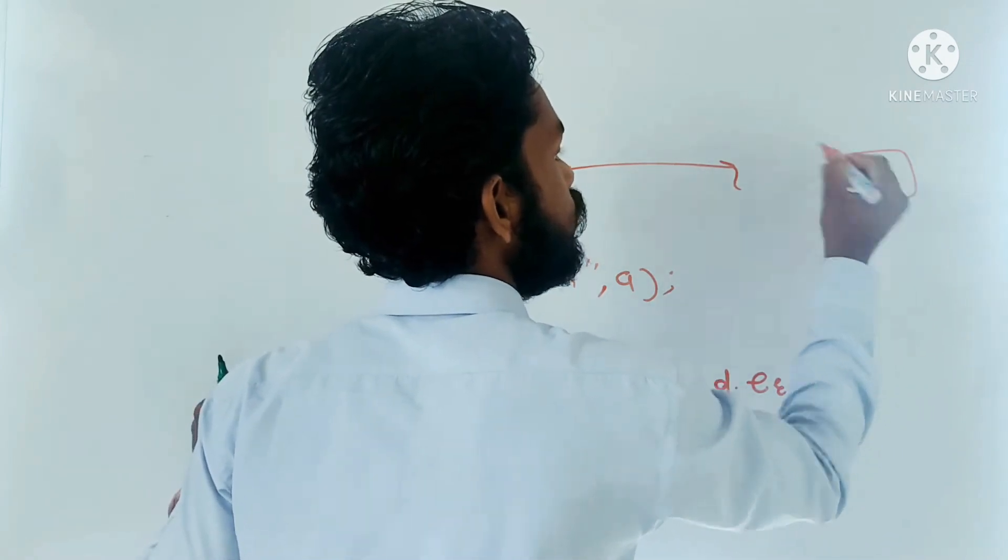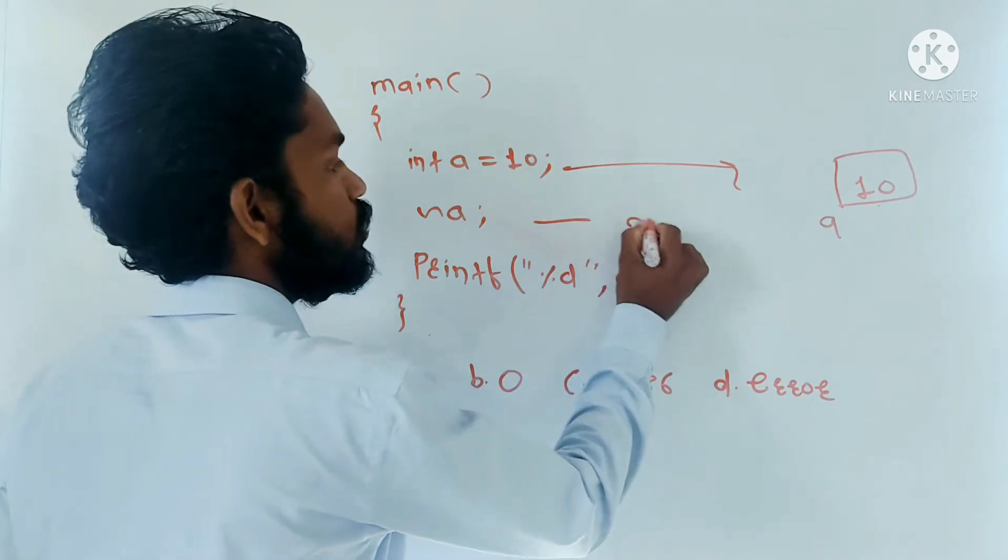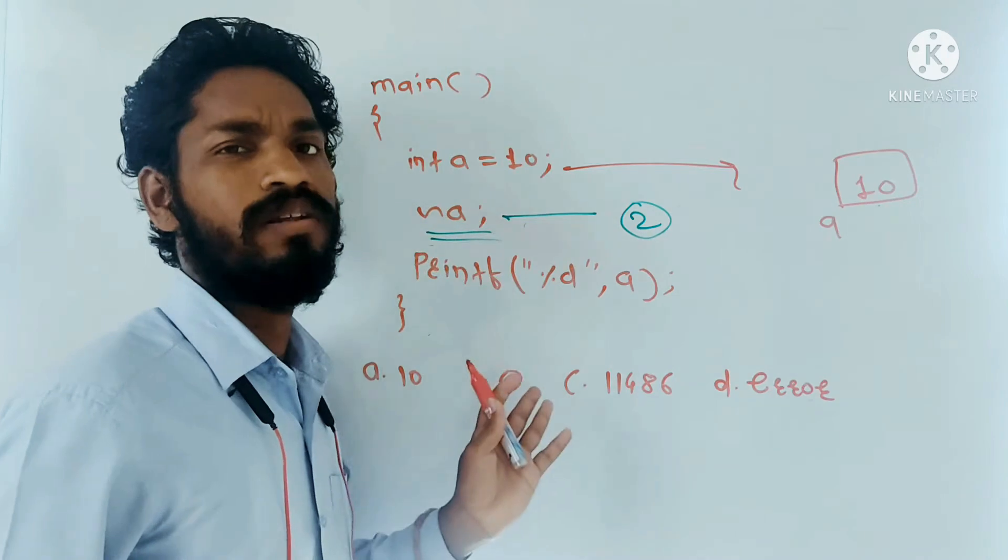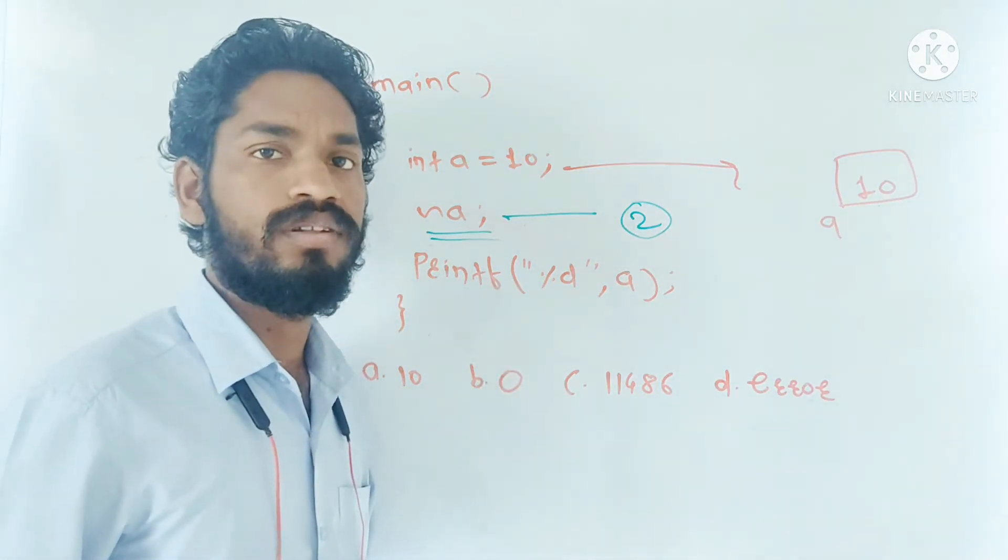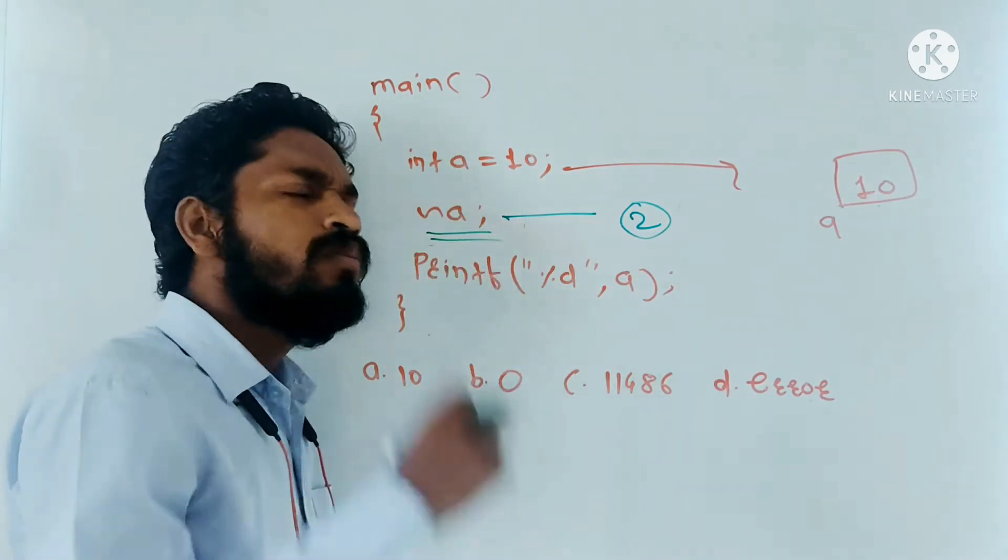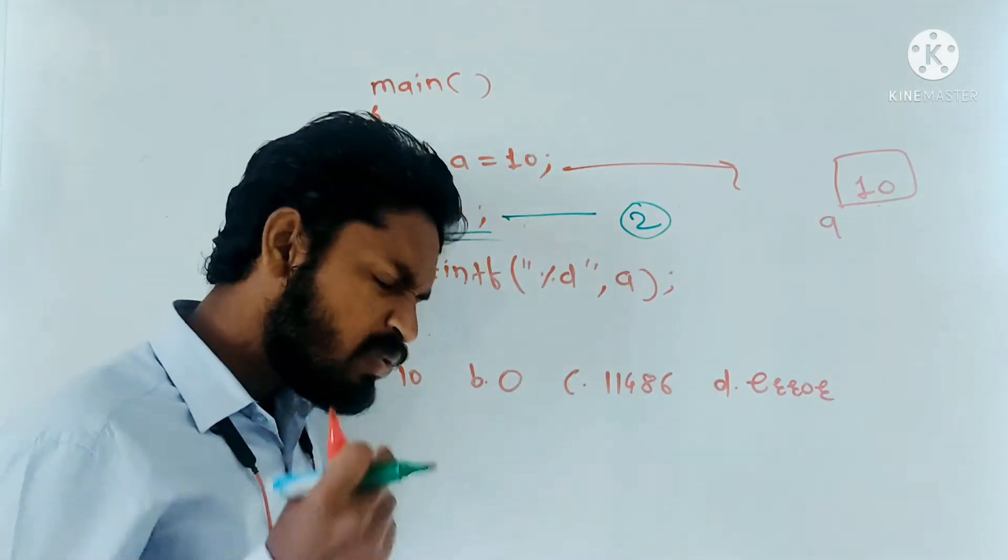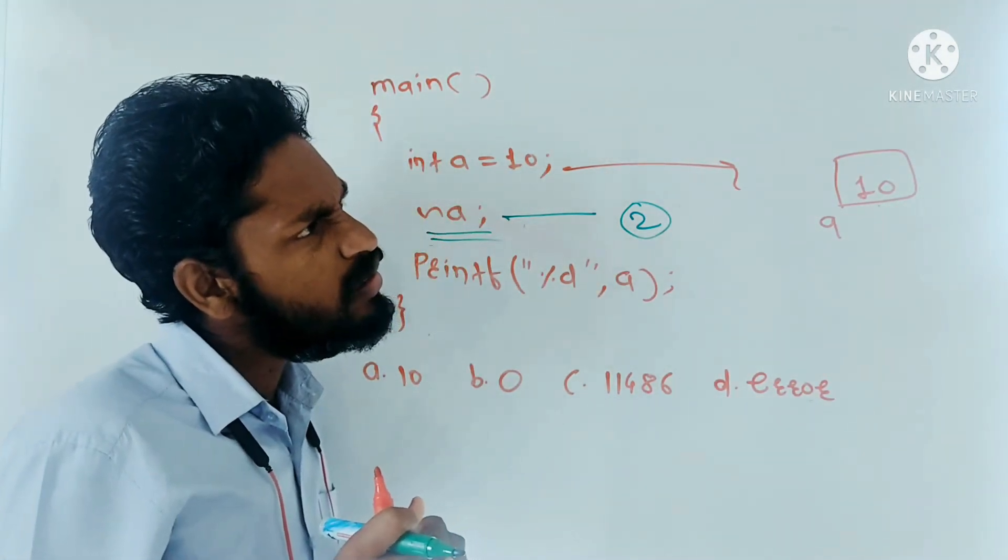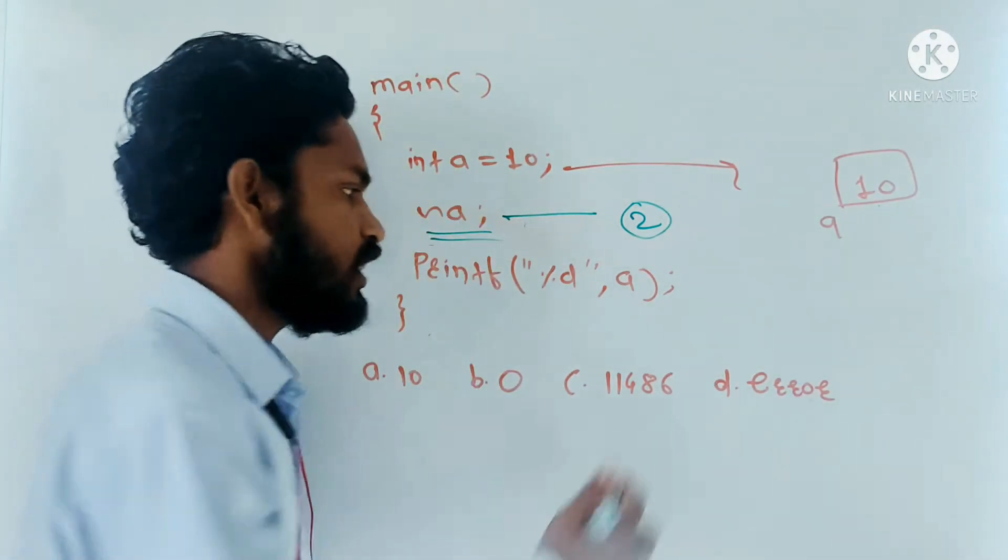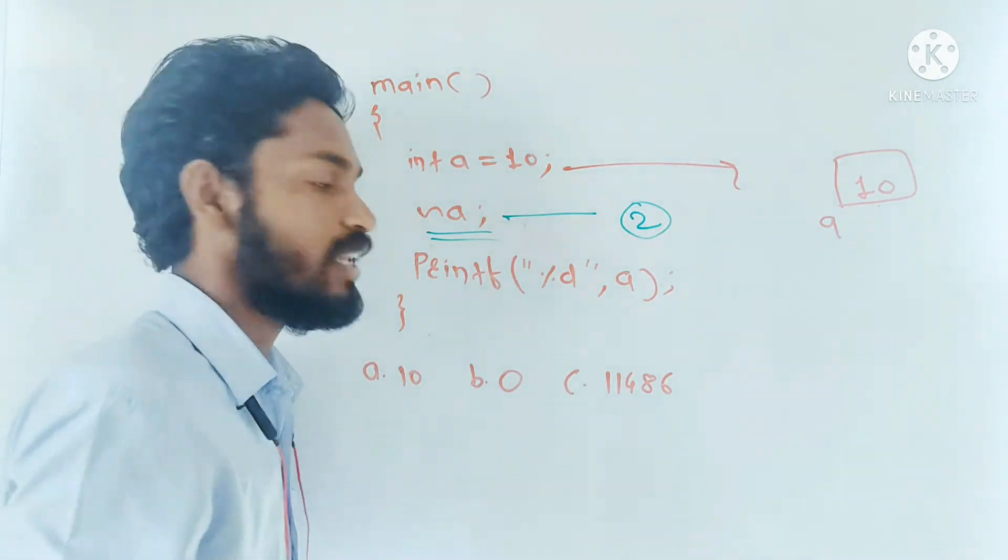I hope everyone knows here what will happen - the memory will allocate for variable a, 10 will copy into that memory location. Then very important discussion is all about this second line. If you know the concept of the second line, then you will solve this question in two seconds. See, one of the biggest mistakes students do here - they think bitwise NOT of a is not a correct expression. So they will think the compiler will generate error and choose option D, error. One thing is sure: this code never generates any error. That's why remove this option.